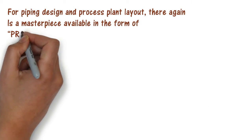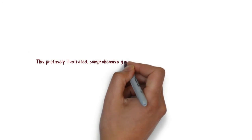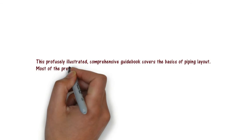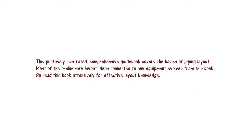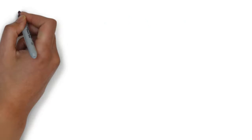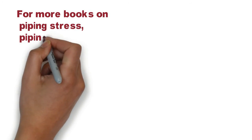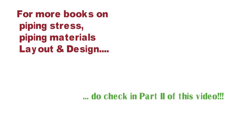For Piping Design and Process Plant Layout, there again is a masterpiece available in the form of Process Plant Layout and Piping Design, and it's by Roger Hunt and Bauschaberg. This professionally illustrated comprehensive guidebook covers the basics of piping layout. Most of the preliminary layout ideas connected to any equipment evolves from this book. So you can read this book attentively for effective layout knowledge and overall layout mastery. For more books on piping stress, piping materials, layout and design, do check part 2 of this video. Thank you.